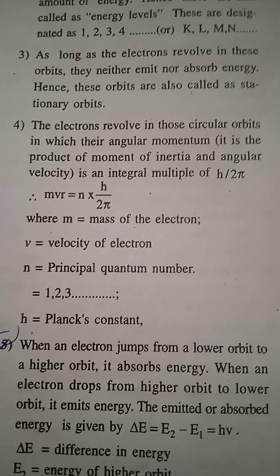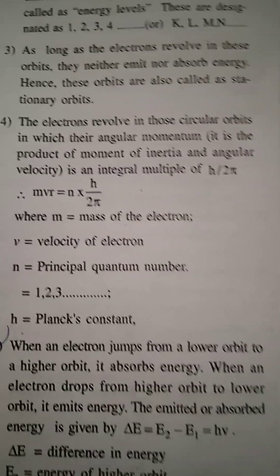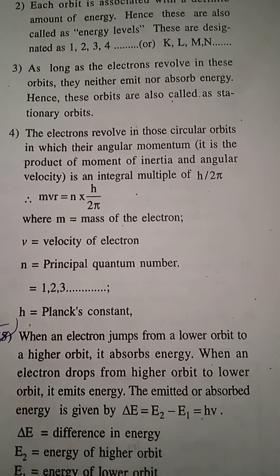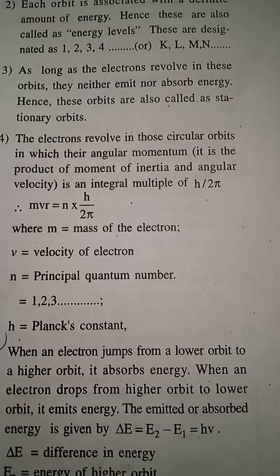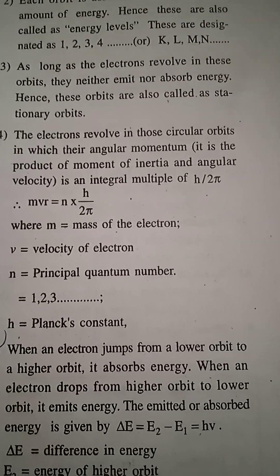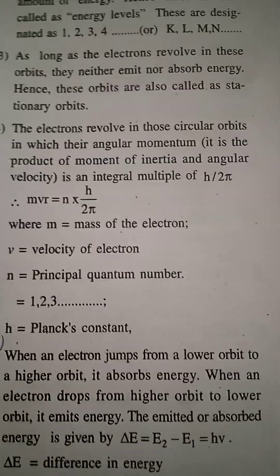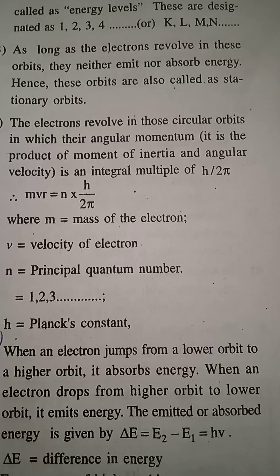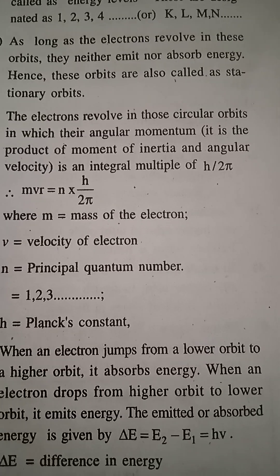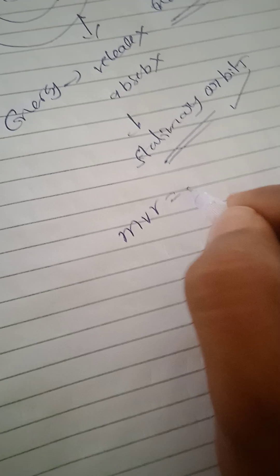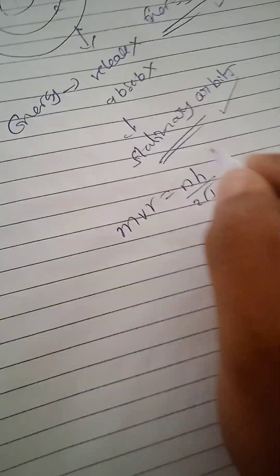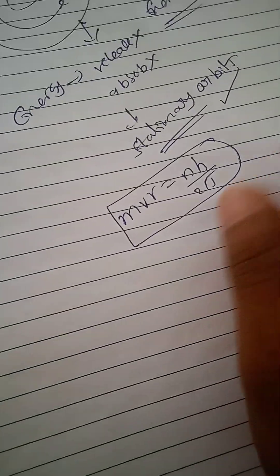Fourth point: the electron revolves in circular orbits in which the angular momentum is quantized. The angular momentum formula is MVR equals nH by 2π. This formula is important.